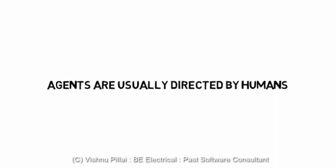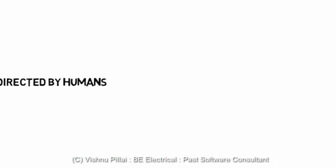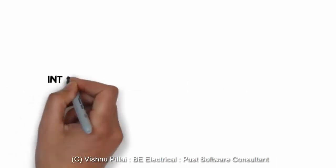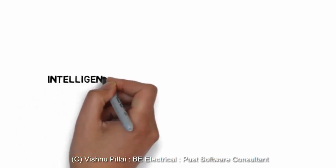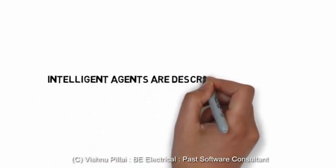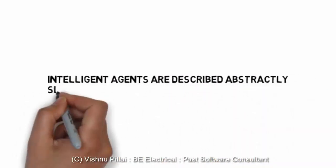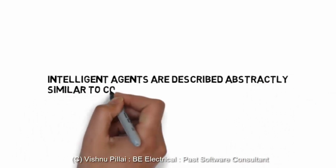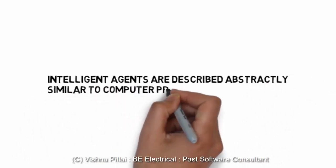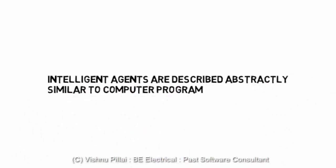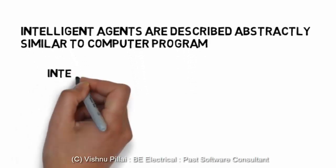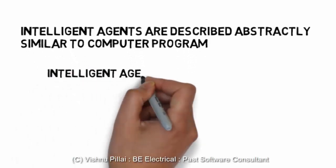What an agent should do, or how it should function, is programmed and controlled by humans. For example, a robot working to clean the house may be directed to do so by a human. Intelligent agents are described abstractly, similar to computer programs.